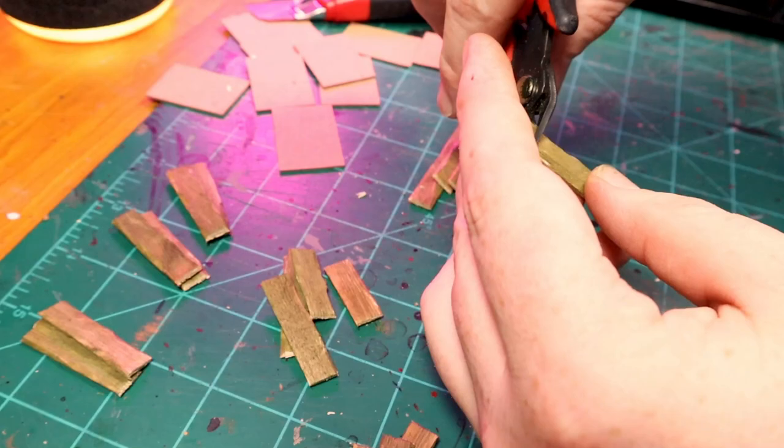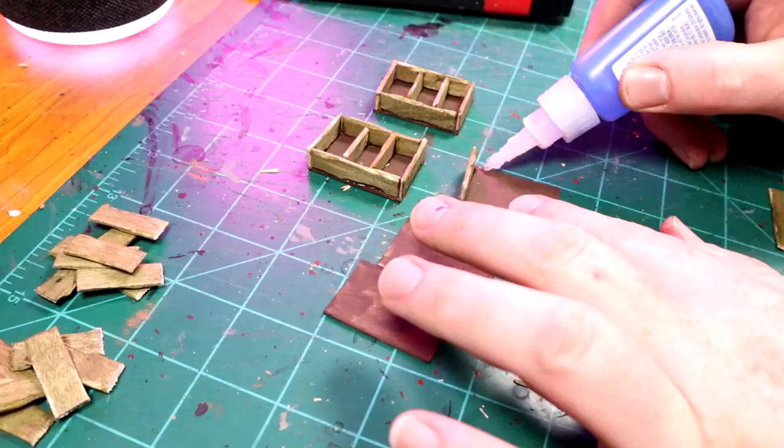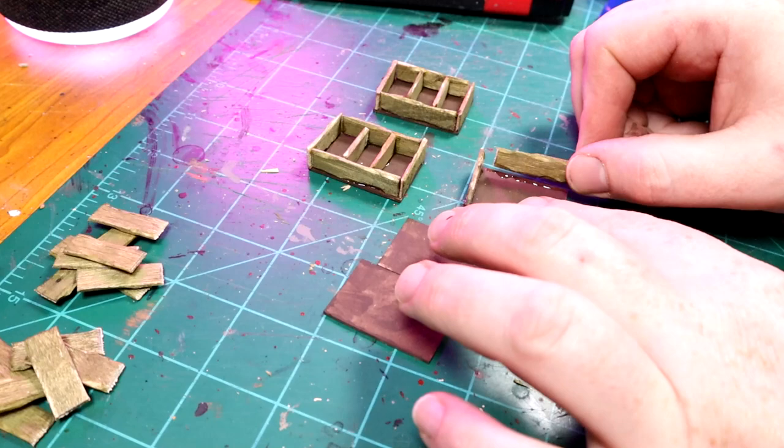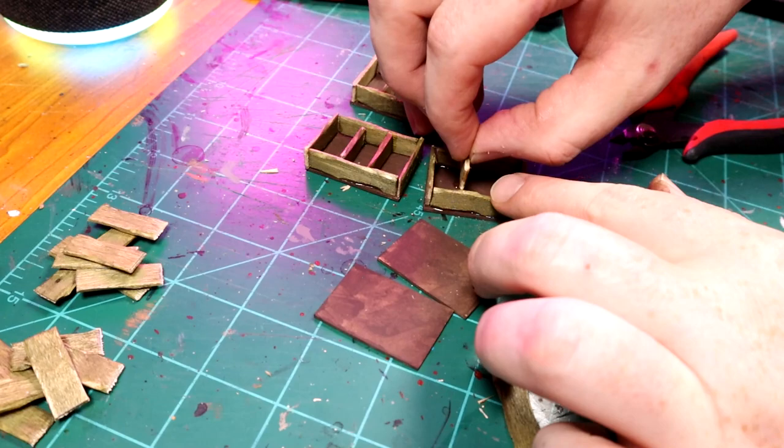I cut the craft sticks into one and a half and one inch lengths. Then superglue them to the chipboard backing. I did need to cut some of the boards slightly smaller in order to fit the boards in place right.